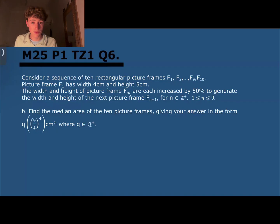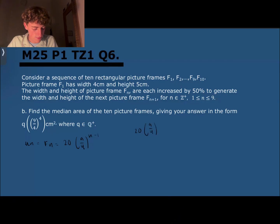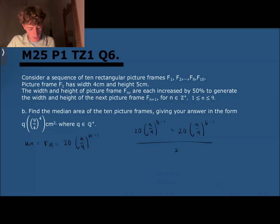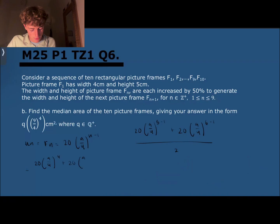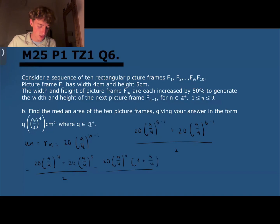To find the fifth and sixth terms, we use f(n) = 20 times (9/4) to the power of n minus 1. So the fifth plus the sixth is 20 times (9/4) to the power of 4, plus 20 times (9/4) to the power of 5, all over 2. We can factor out 20 times (9/4) to the power of 4 from both terms, giving 20 times (9/4)^4 times (1 plus 9/4).